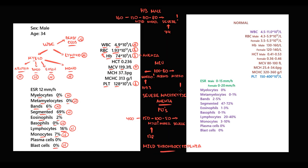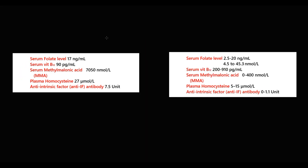So it's severe macrocytic anemia accompanied by mild thrombocytopenia. Now we have to determine the type of macrocytic anemia. There are two possibilities: it can be caused by B12 deficiency or by folate deficiency. First we check folate level and B12 level. In this case folate level is normal but B12 is low, so it's B12 deficiency anemia.